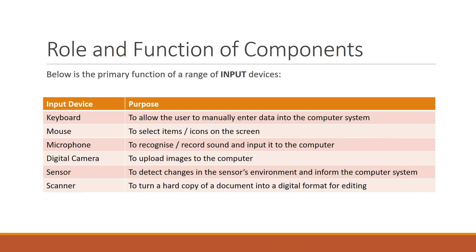You also need to know how each of these devices function. Starting with input devices: the keyboard is used to allow the user to manually enter data into the computer system. The mouse is used to select items or icons on the screen. The microphone is used to recognize and record sound and input it into the computer. A digital camera can be used to upload images to the computer. A sensor is used to detect environmental changes and send a signal to the processor — for example, if you turn on your house alarm fitted with a motion sensor and it detects movement, it sends a signal which makes the alarm sound. Finally, a scanner turns hard copies of documents into a digital format for editing.